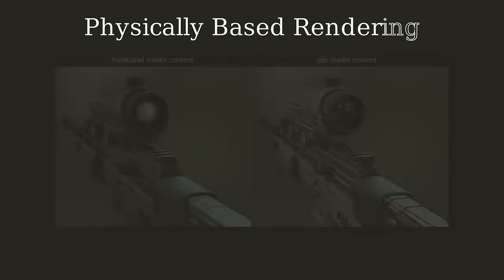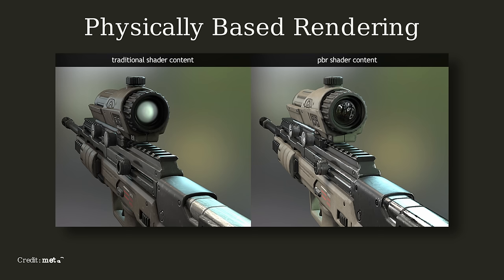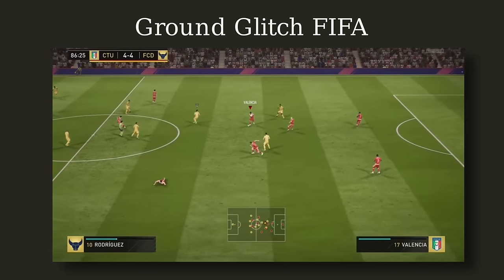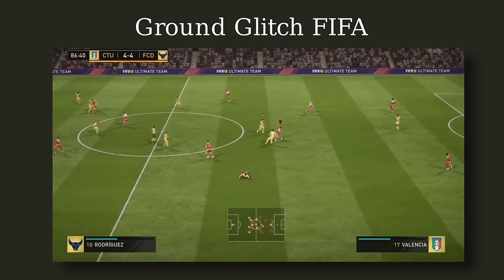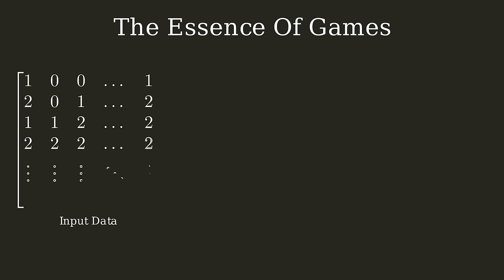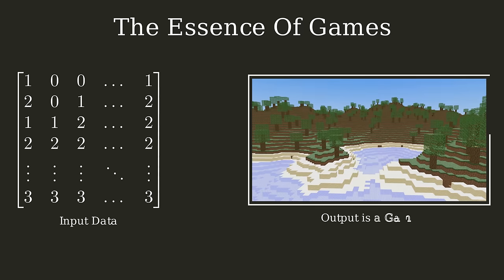3D games encompass a massive range of topics — from physically-based rendering, to calculating physics in a simulated world, to just figuring out if the player's touching the ground. One of the fundamental structures in OpenGL that helps build these immersive 3D worlds is something called buffers. At the end of the day, 3D games are simply a transformation of some input data to some output data, and today we will be learning how we can represent that data on a graphics card with the help of OpenGL.